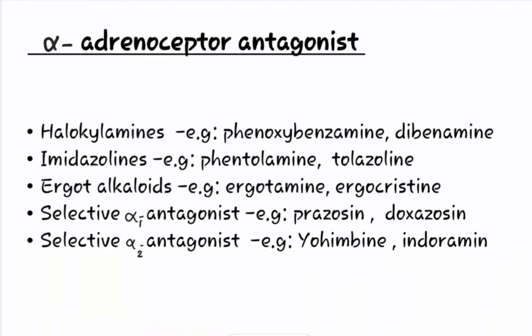Let us study in detail about the first category of classification, that is alpha adrenoreceptor antagonist. These are the drugs that inhibit the action of sympathetic stimulations only at the alpha receptor in our body. They could be further classified into five types.